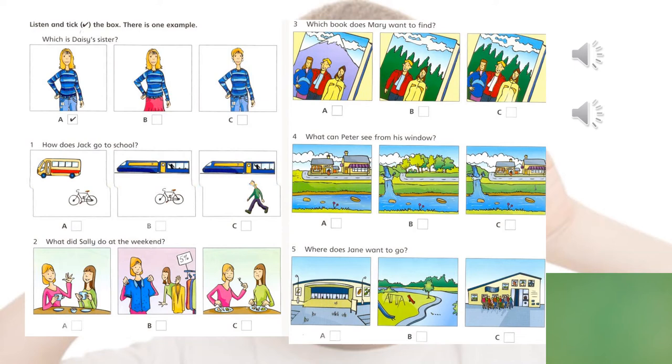Three. Which book does Mary want to find? Can I help you? Yes, I need a book. It's called Cold Mountain. Cold Mountain. Oh yes, it's there. Can you see it? No. Has it got a picture of a mountain on it? No, it's a forest, and there's a man and two women in the picture. Oh, I see it. Thanks.